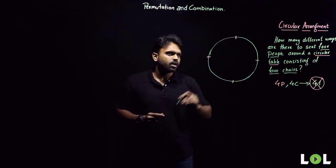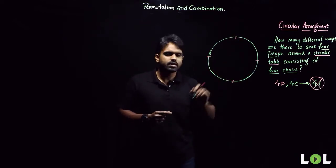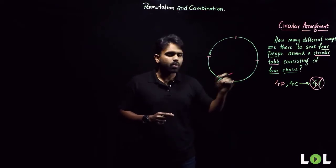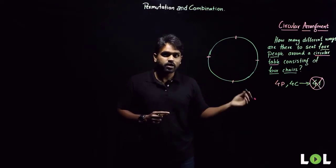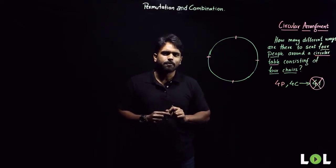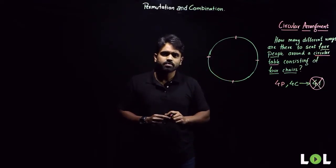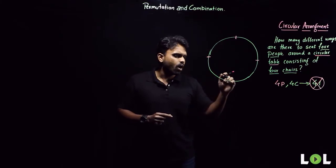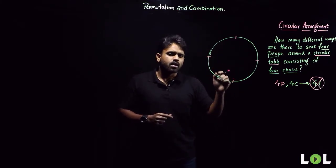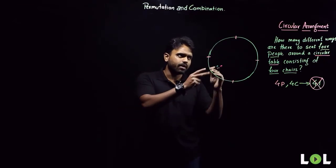Let's place this table inside a room which has four chairs — first, second, third, and fourth. Four people are waiting outside the room. When the first person walks in, in how many different ways can he sit? He can sit in only one different way. You might think there are four chairs so he can sit in four different ways — no, because this is a circular arrangement. Wherever the person sits, that will be called the first way.